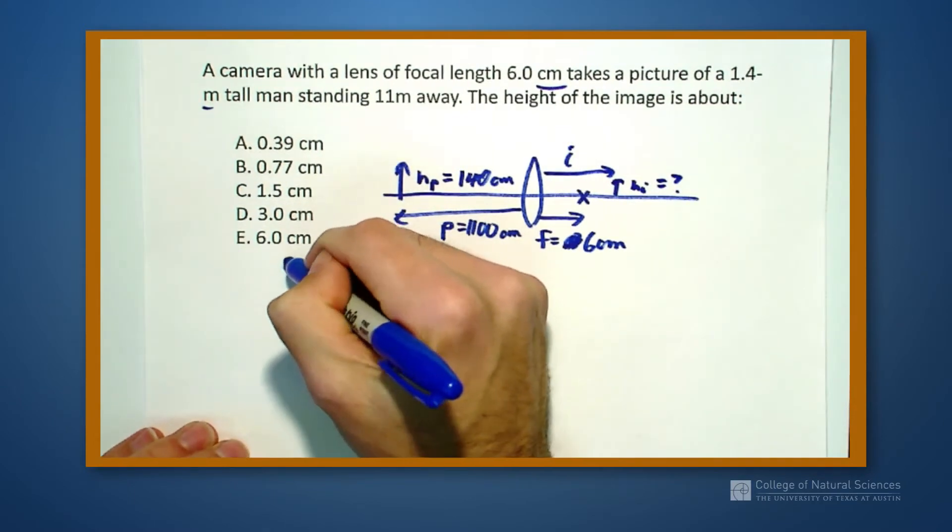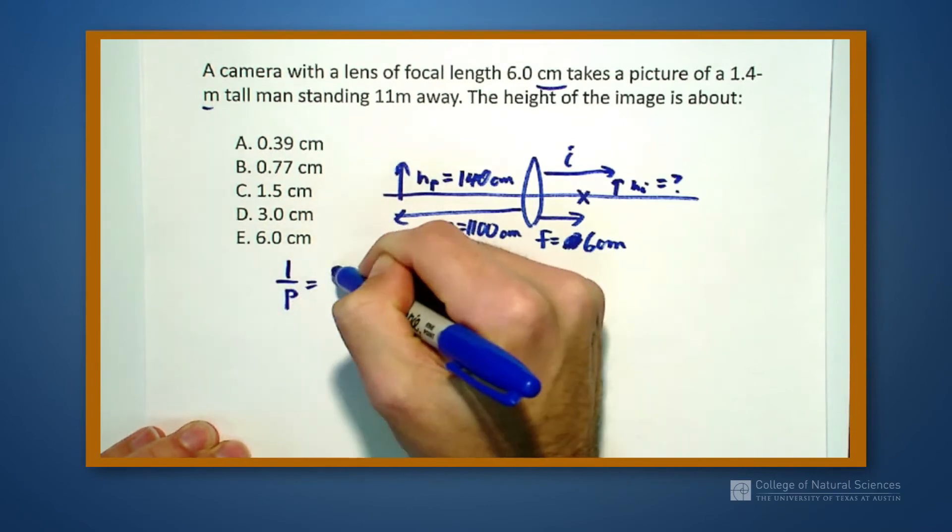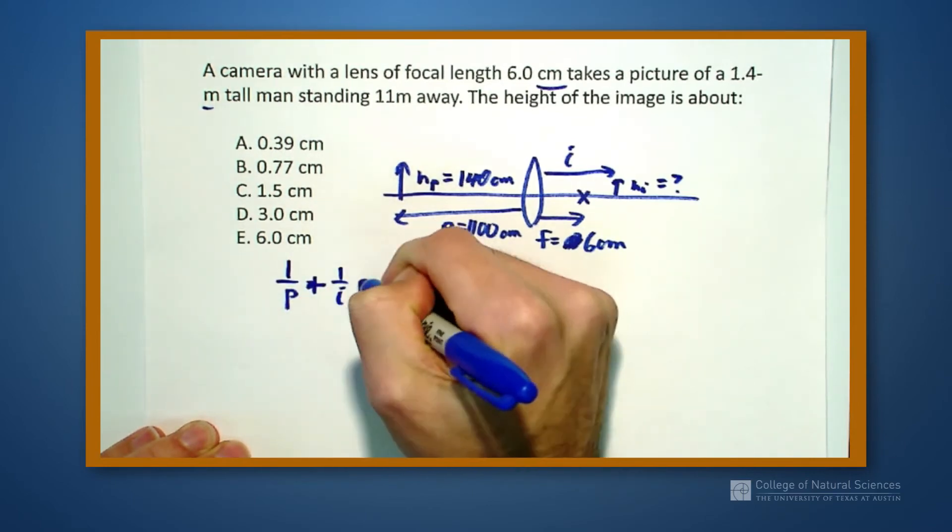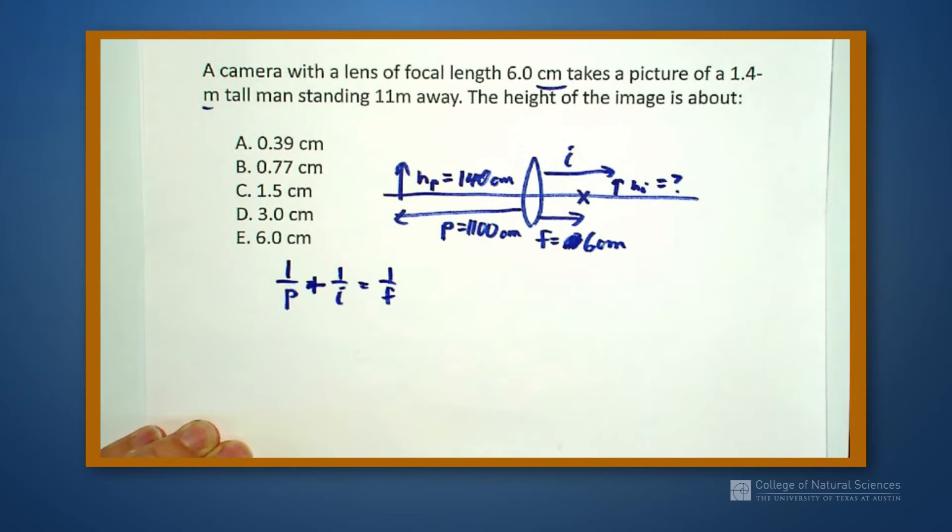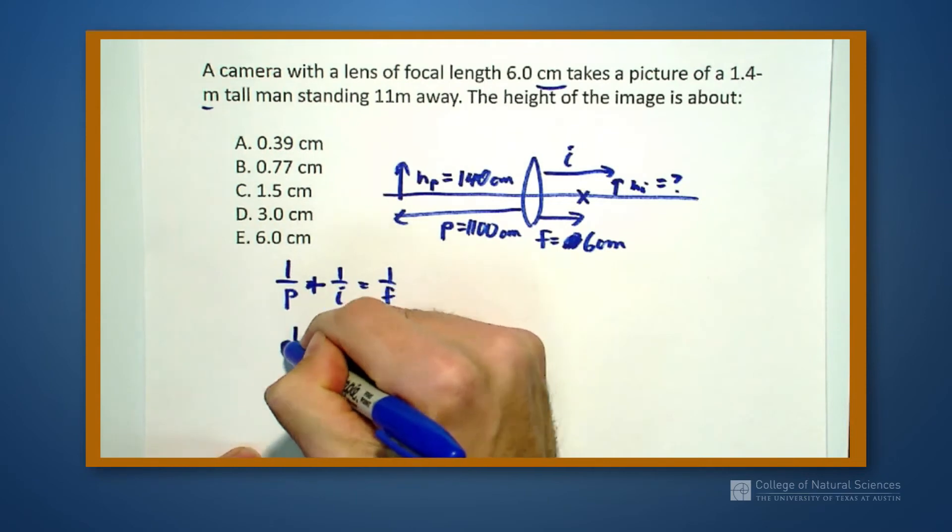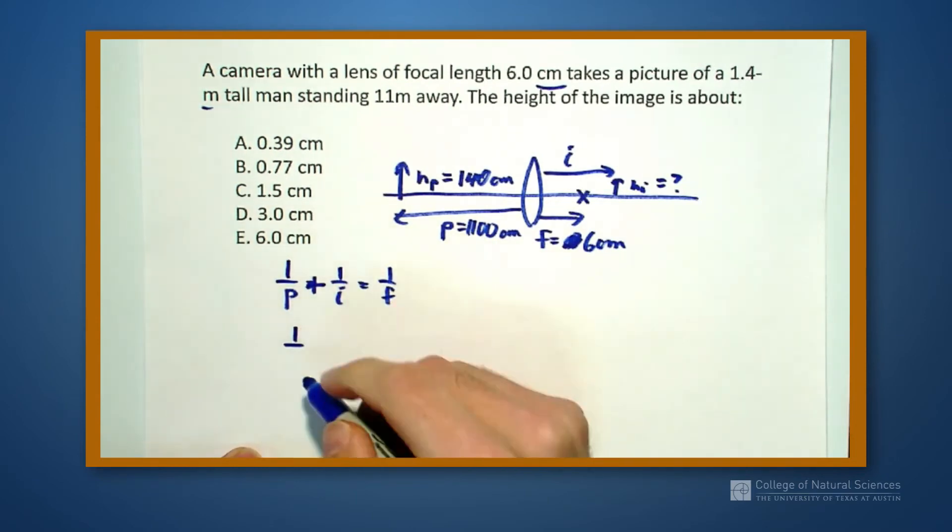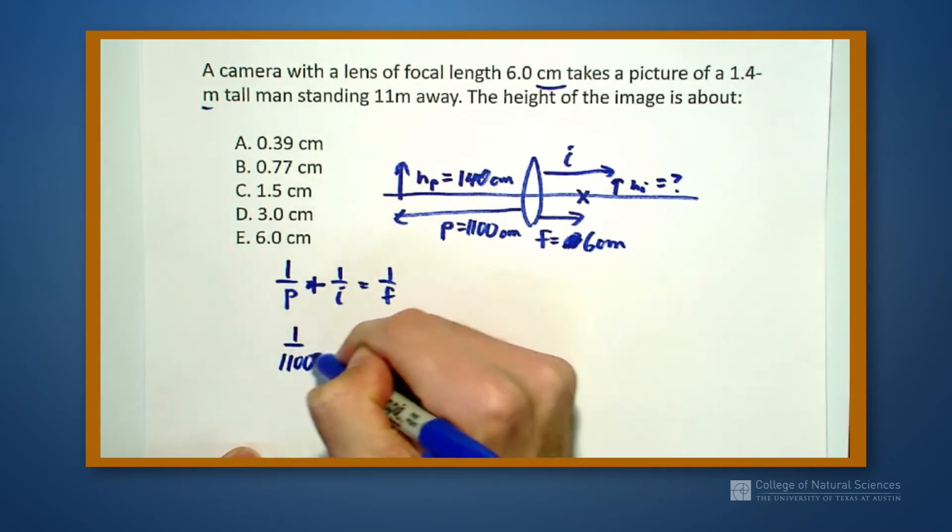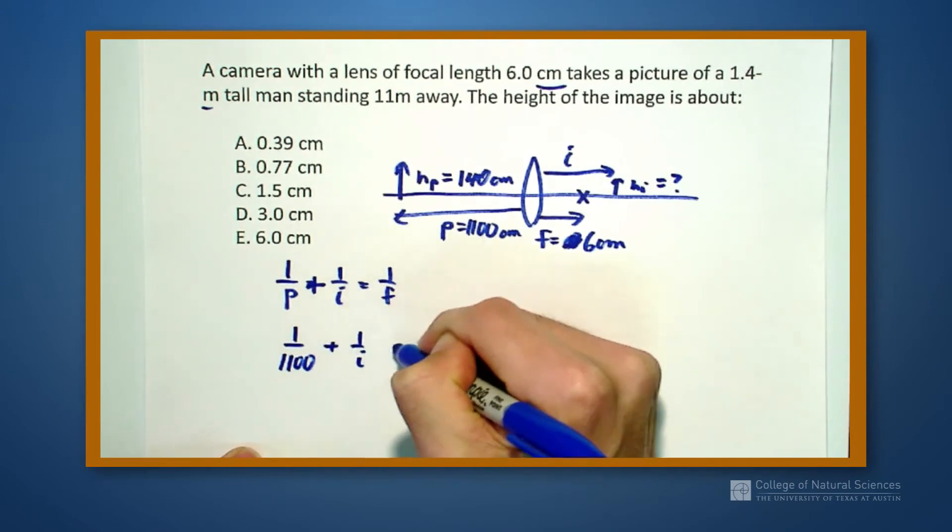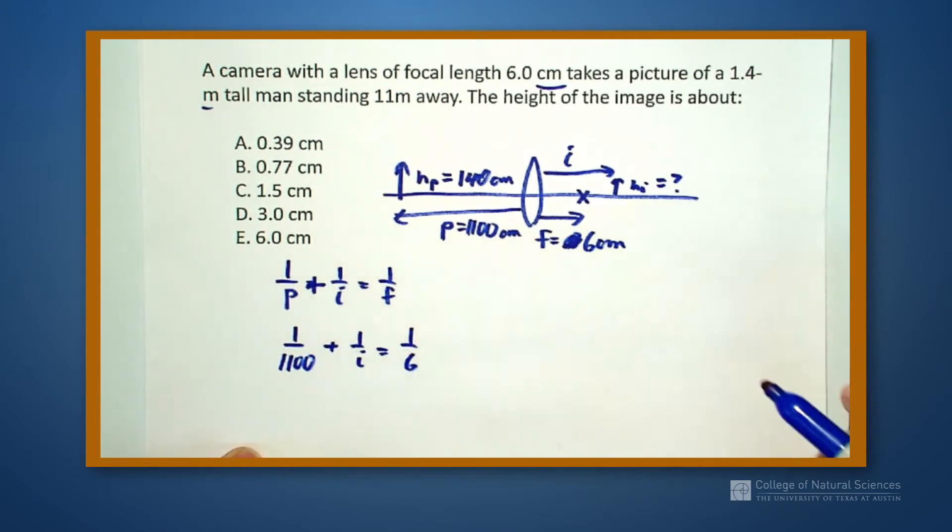So I go to the equation that I know: 1 over p plus 1 over i is equal to 1 over f. I'm going to start substituting in values for this. I have 1 over 1100 plus 1 over i is equal to 1 over 6. And if I work out the math on this, i is approximately equal to 6 centimeters.